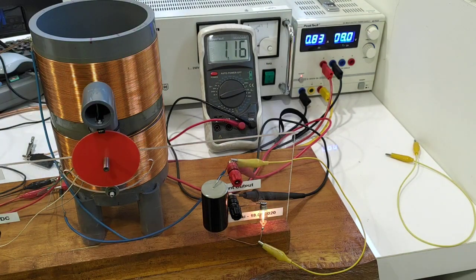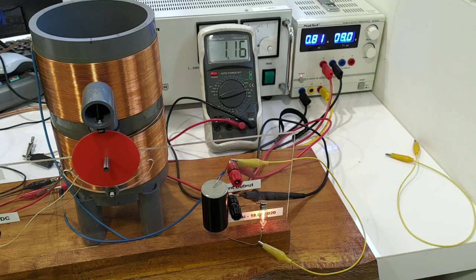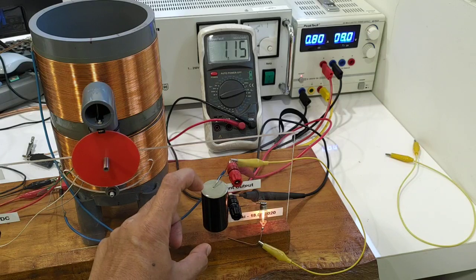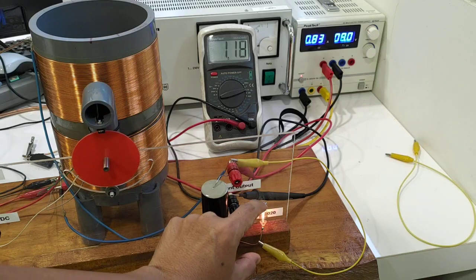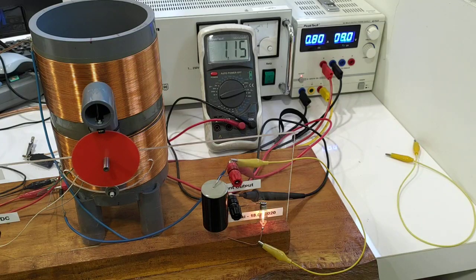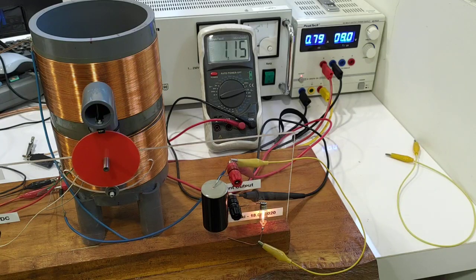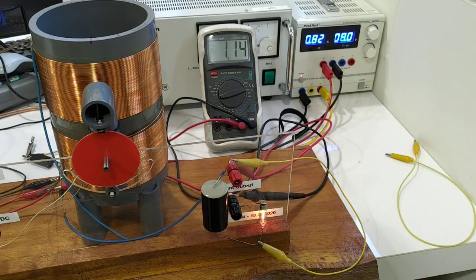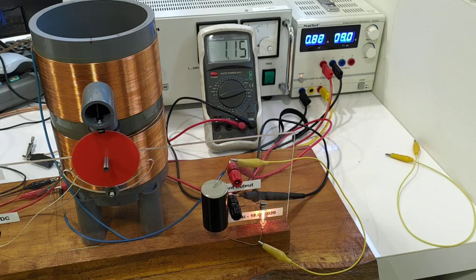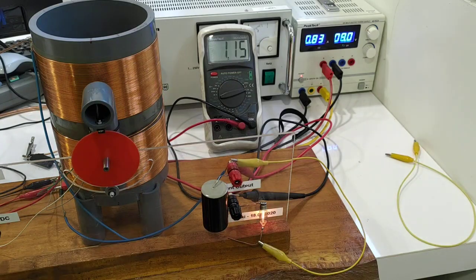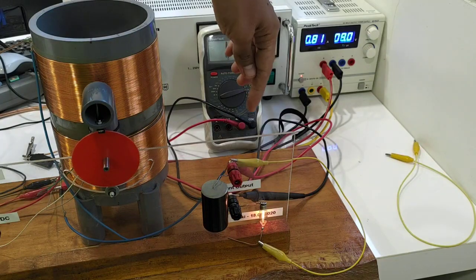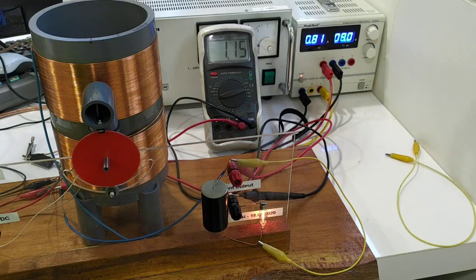Now we see that the output voltage, the voltage at the capacitor or at the load, is 1.15 volts. Now I'm going to measure the current.